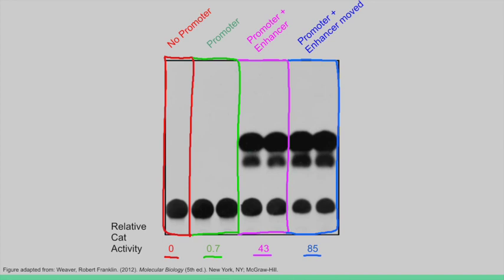We can conclude from this data that the enhancer is necessary for transcription from the P10 promoter, and that the enhancer can be moved and still function.